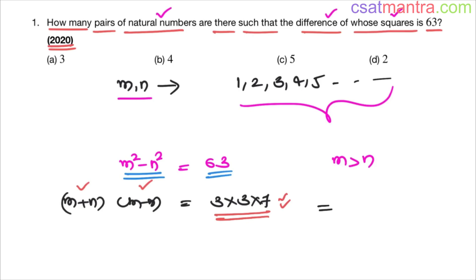Now one possibility is taking these two as 1, so 9 into 7. This is one possibility. Second possibility is 3 into 7, so 21 into 3. Third possibility taking all of them, 63 into 1.